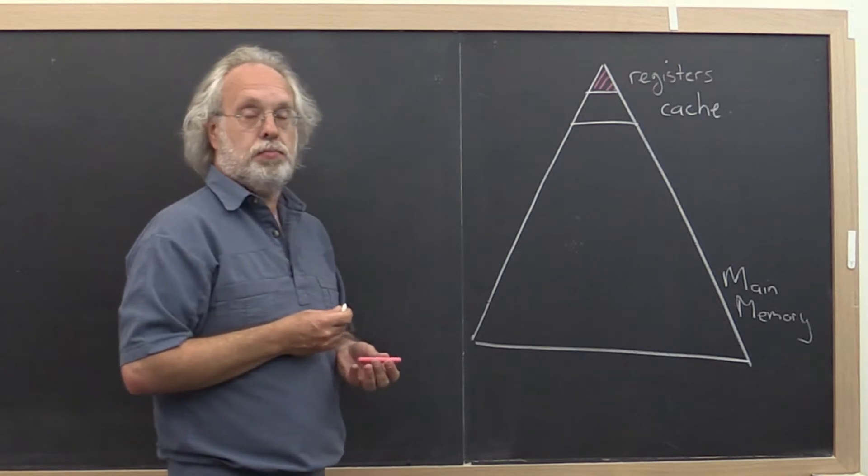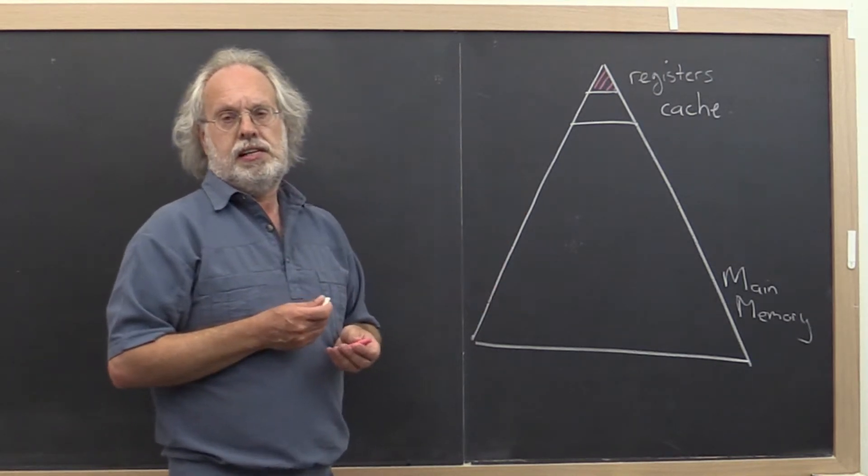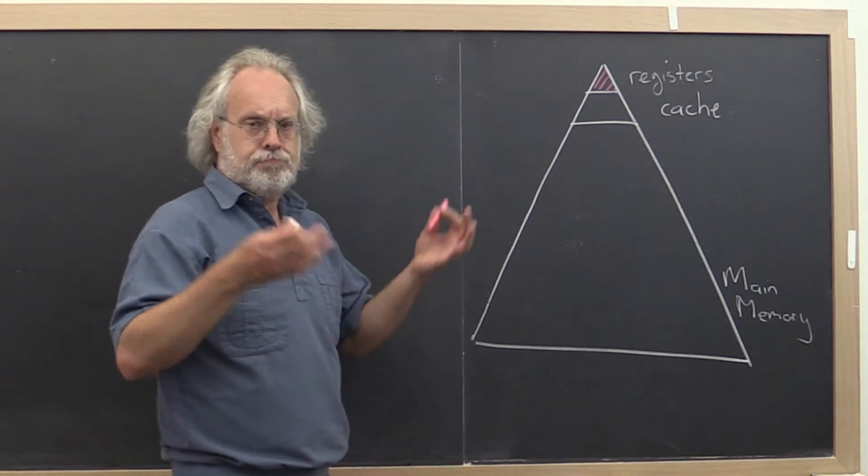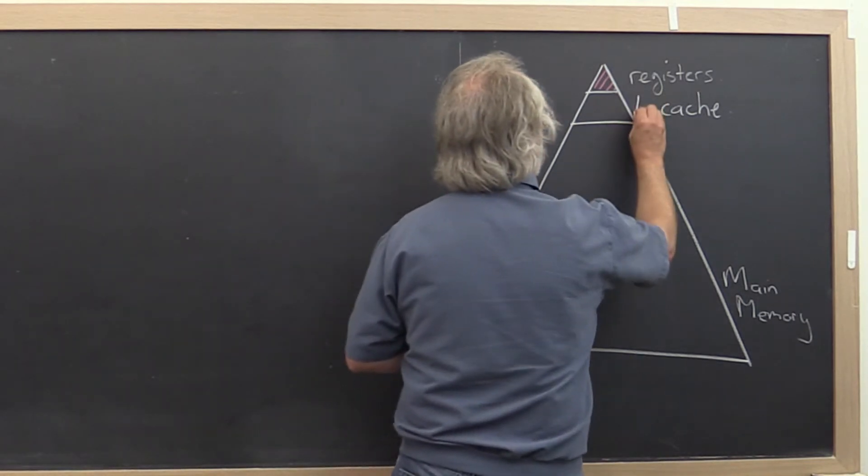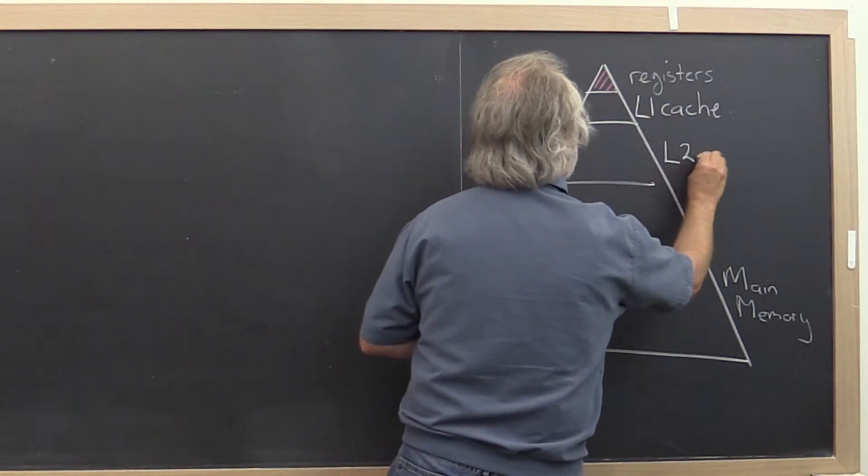The cache worked pretty well until things got worse. And then they said, well, instead of having one cache, let's have two caches. So at that point we ended up with a level one cache, and they created something called the level two cache.